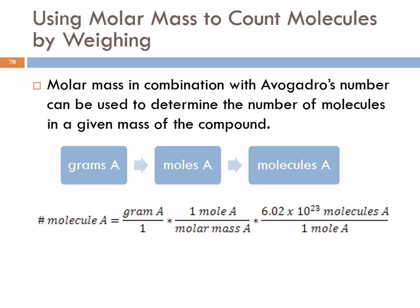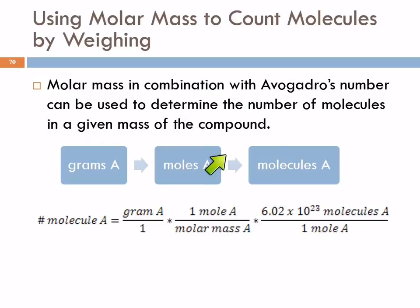This is how we use molar mass to count molecules by weighing. We need the molar mass to count molecules. The overall plan is: we start with grams — we can weigh things out on balances, which is very convenient; we cannot count atoms directly. We convert grams of substance A to moles using the molar mass, and then from moles to molecules using Avogadro's number: 6.022 × 10²³ molecules per mole. That works for anything, just like a dozen is 12 of anything.